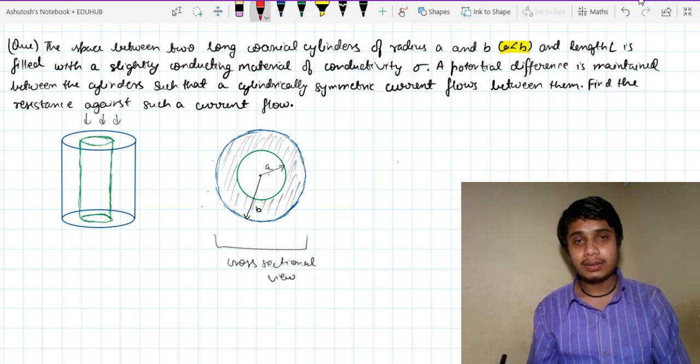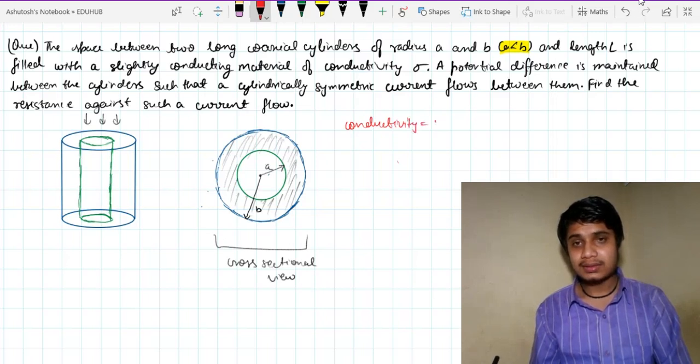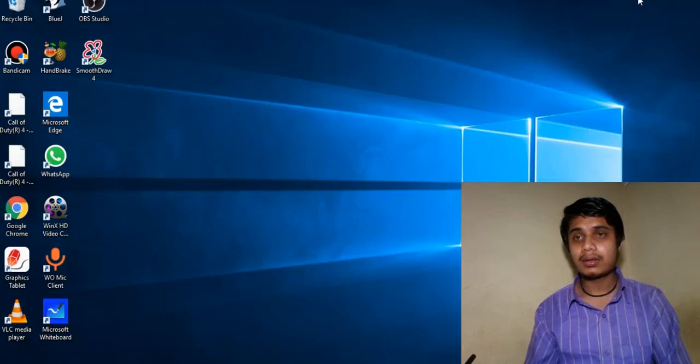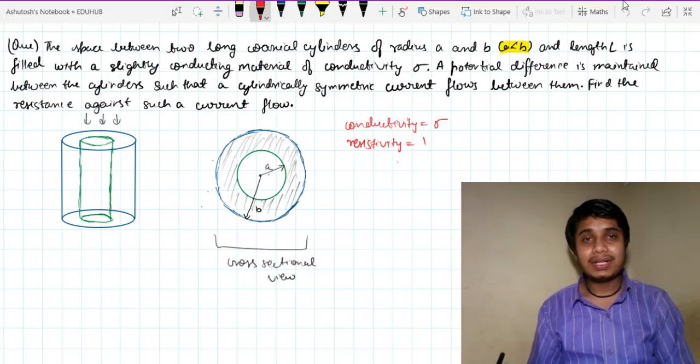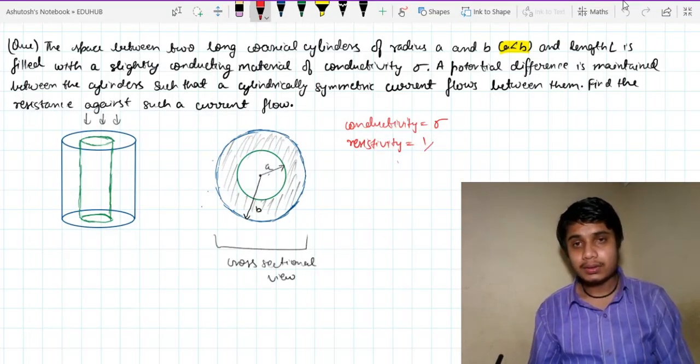So let me jot it down that conductivity is sigma. So what will be resistivity? It will be 1 over sigma. So resistivity will be 1 over sigma.